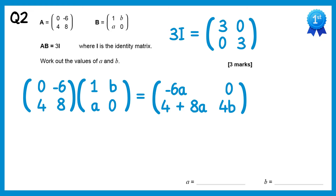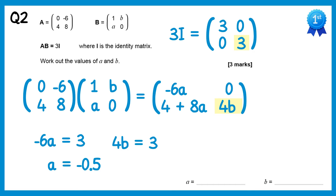Starting in the top left, we've got negative 6a and 3 — they must be equal, so negative 6a equals 3. Dividing both sides by negative 6, we get a equals negative 0.5, or negative one half. Comparing the bottom right elements, 4b must equal 3. Dividing by 4 on both sides gives b equals 3 quarters, or 0.75. So the answers are a equals negative 0.5 and b equals 0.75.